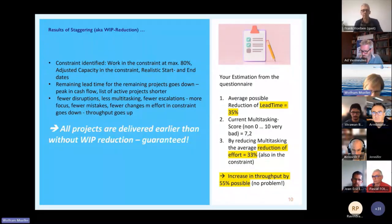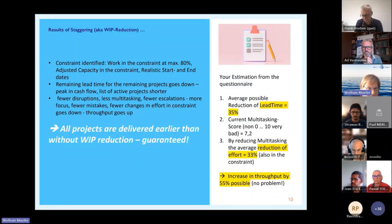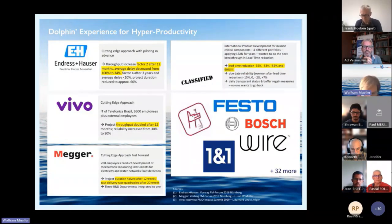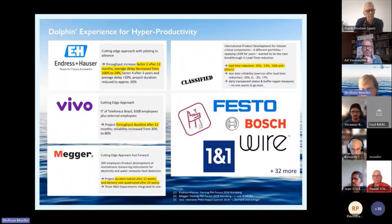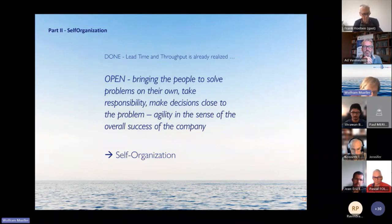The only assumption is that the constraint is within your organization. Doing these first four steps will lead to shorter lead time and more throughput reliably. It's not very hard and it does not take long — the only thing you have to do is staggering and stop the non-priority work.